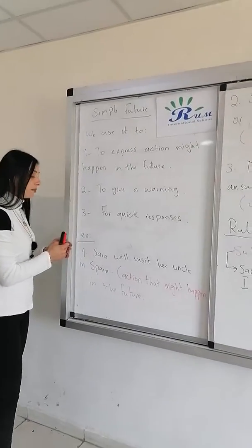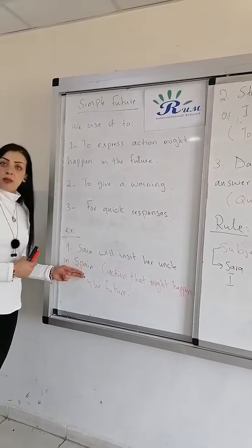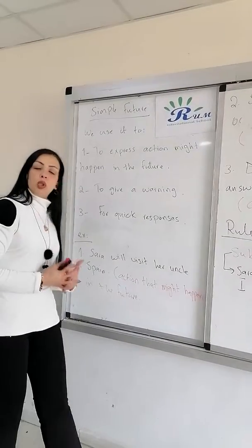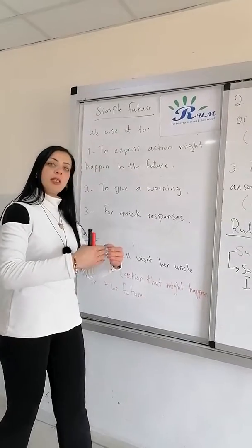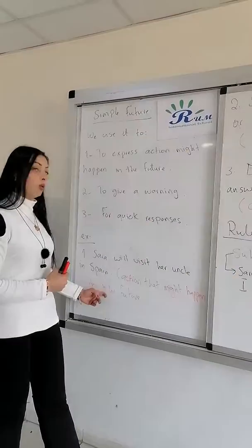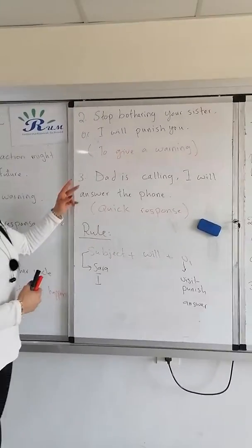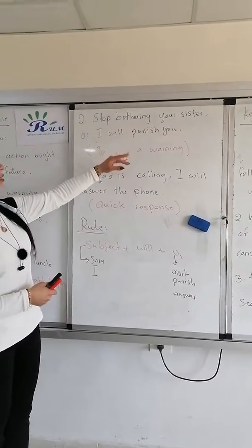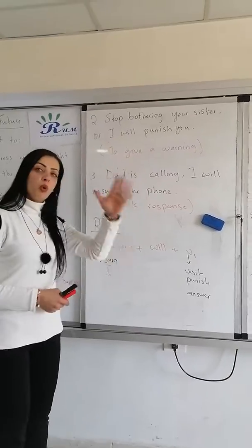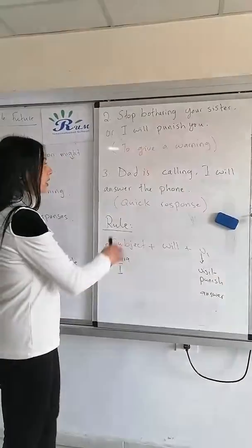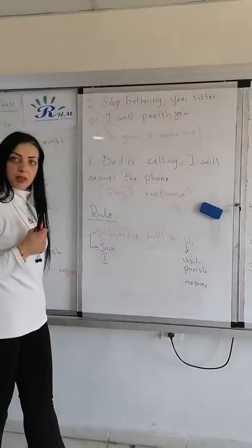Let's take a look here. For example: 'Sarah will visit her uncle in Spain.' I'm not really sure if she's going or not, but this is an action that might happen in the future. The second example: 'Stop bothering your sister. I will punish you.' Now this is to give a warning for someone. There is a calling — I will answer the phone. This is for a quick response.